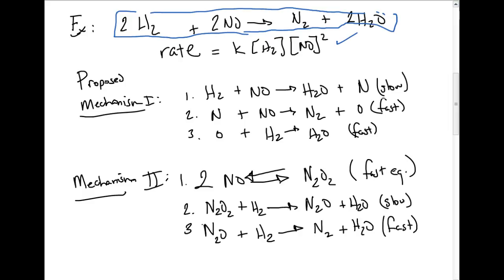And the question would ask, there's two proposed mechanisms, which of the two mechanisms match the rate law? So let's take a look at mechanism 1. We have an initial slow and then a fast and then another fast. So if we have an initial slow, we can write the rate law just straight off the slow step because when we have an initial slow, we write the rate law straight off the slow step.